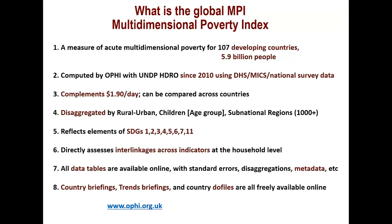What is distinctive about the MPI is that it looks directly at interlinkages experienced at the level of each person. All country data tables are available online on both the HDRO and OPHI websites. There are additional trends briefings, country briefings, and interactive databanks online, as well as the country do-files. If you are a student or would like a different visualization, hopefully you will find there what you need.